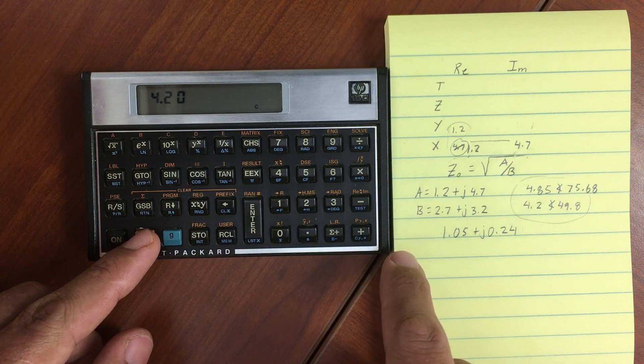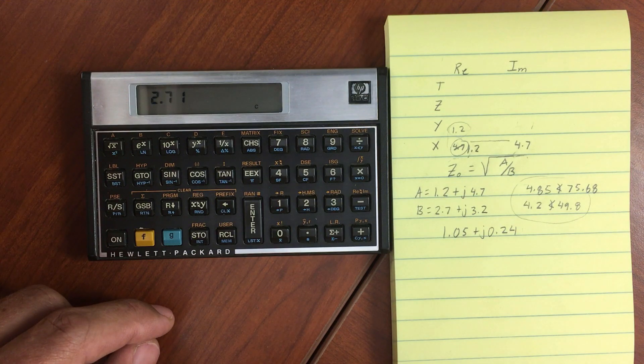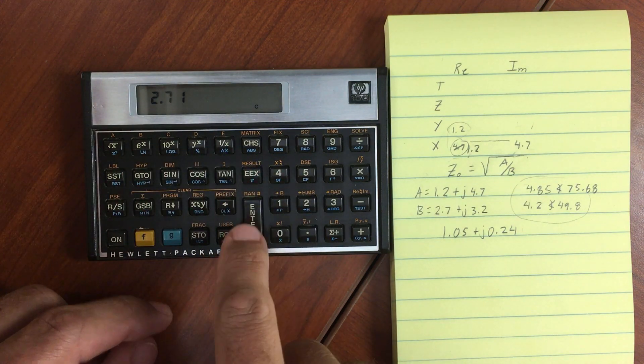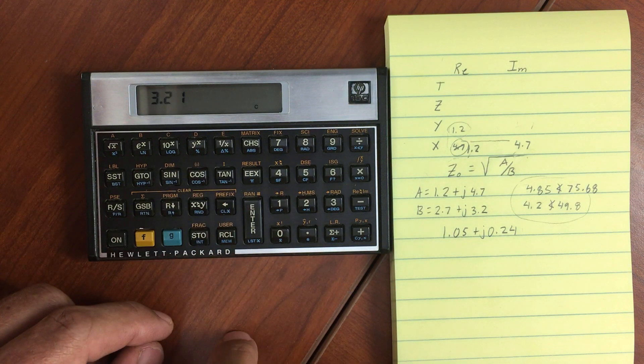And now we convert that to rectangular. We should have 2.7. And our imaginary portion is 3.2.